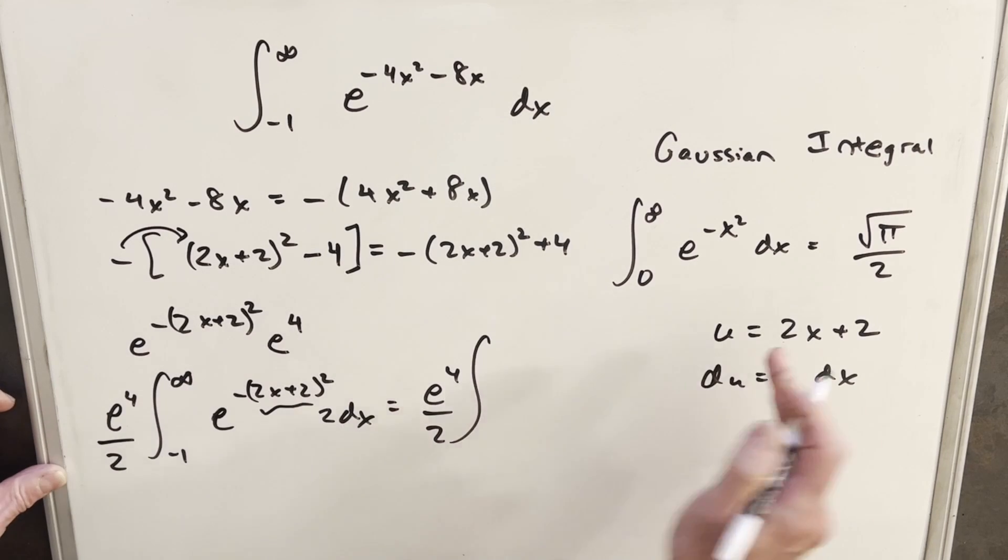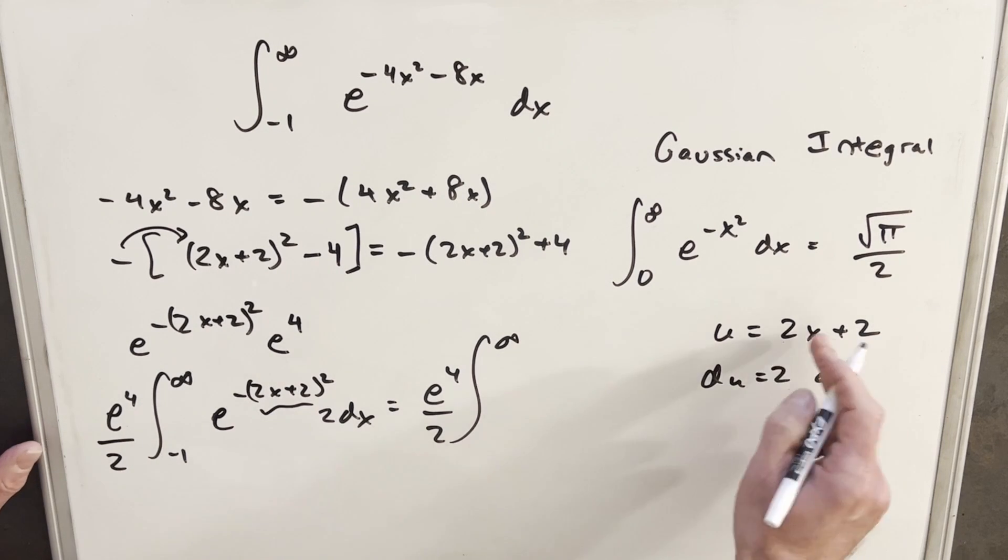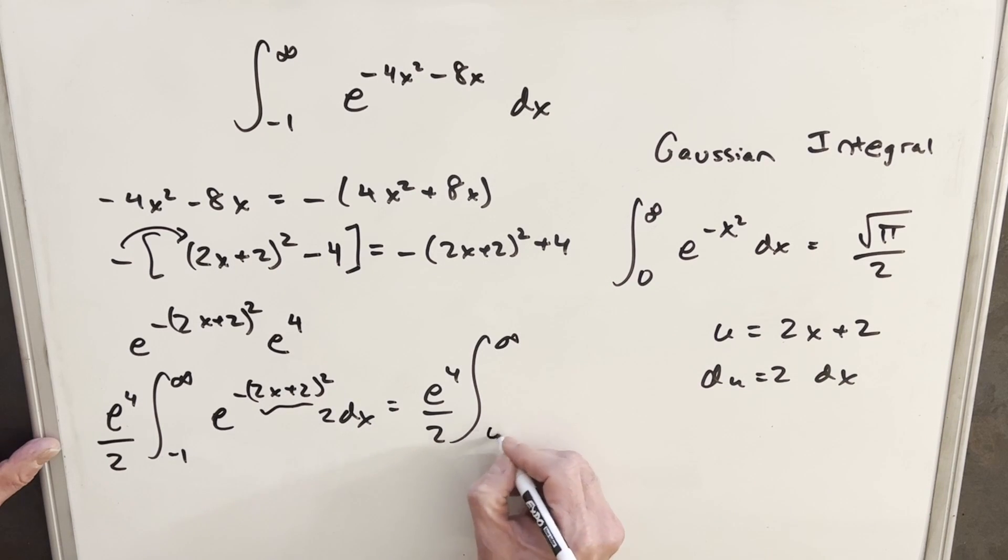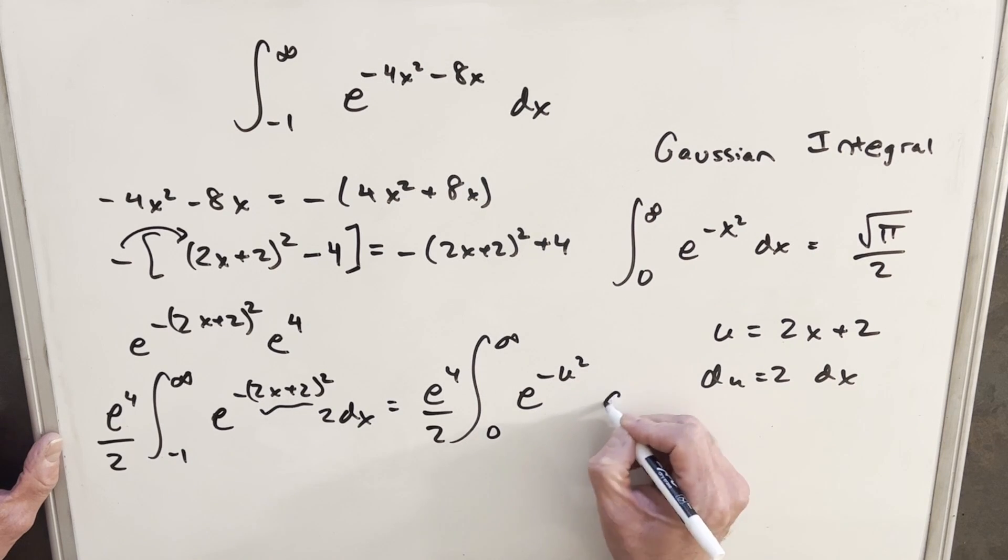Let's look at our bounds. So we plug infinity in here, and that's still infinity. The nice thing about infinity is almost no matter what you do to it, it's still infinity. Then we'll plug a minus 1 in here, and we'll get minus 2 plus 2. We're going to have 0. And then we're just going to have e to the minus u squared du.